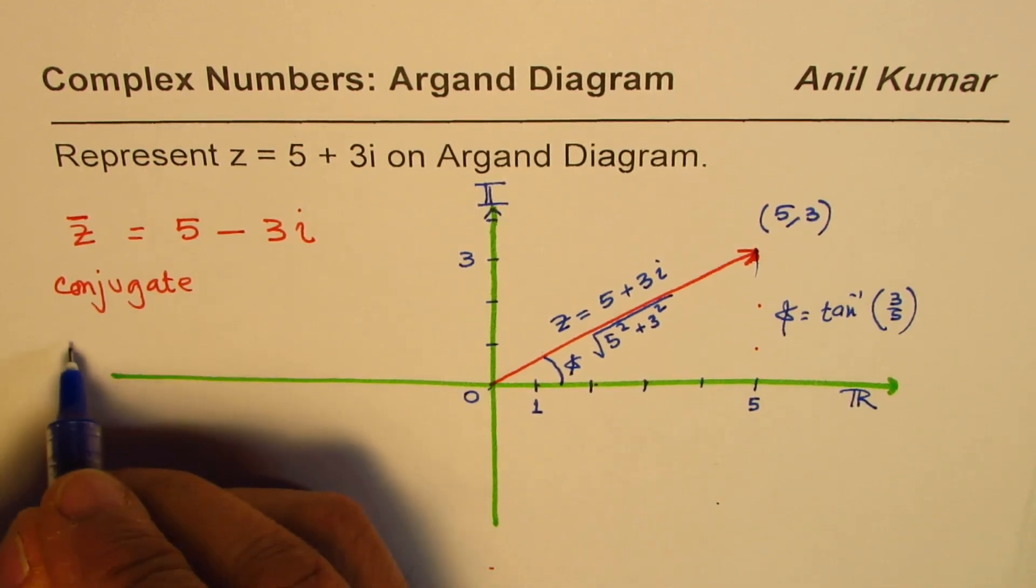Do you see that? So the conjugate will be reflection on the real axis. It will be kind of like this.